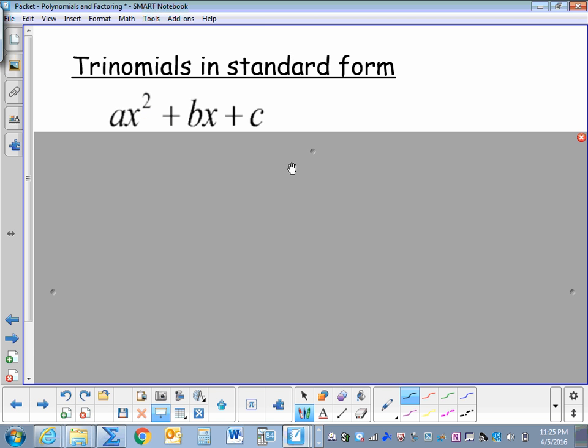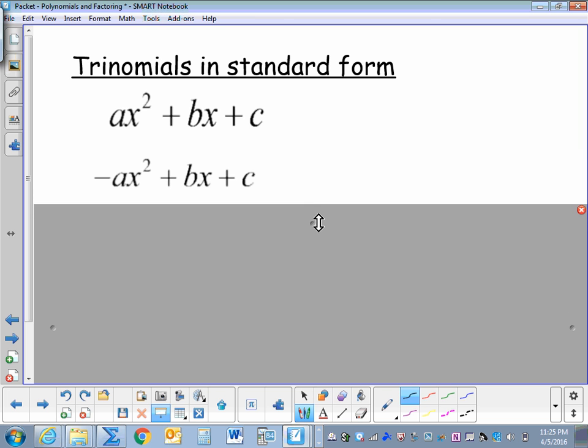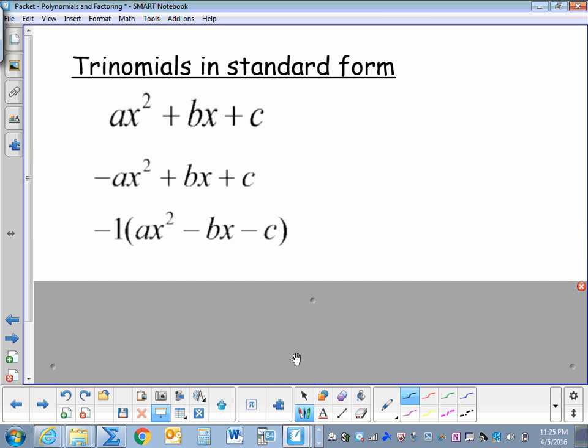While dividing polynomials, try to work with trinomials in standard form: ax squared plus bx plus c. You may have a trinomial with a negative leading coefficient. We also want it to be a positive coefficient. So one way to remedy this is to factor out a negative 1. Now we have a trinomial in standard form with a positive a.